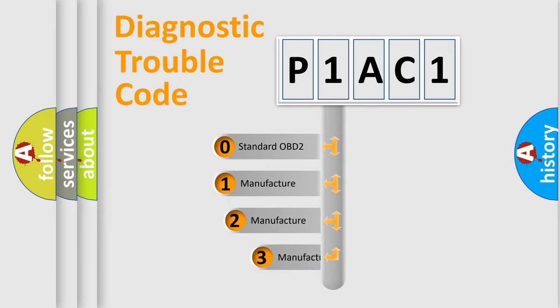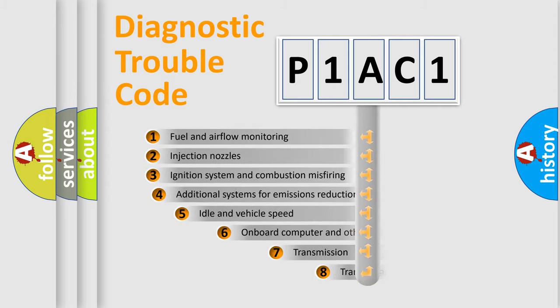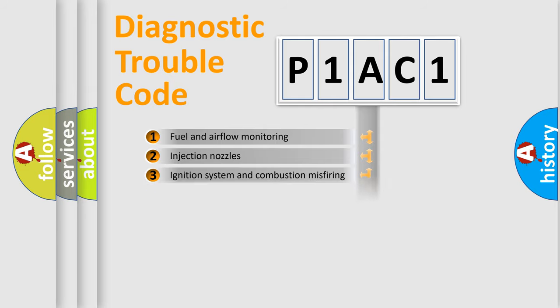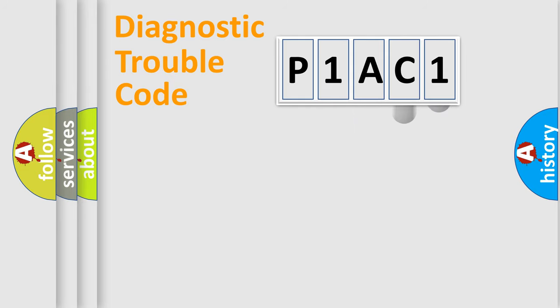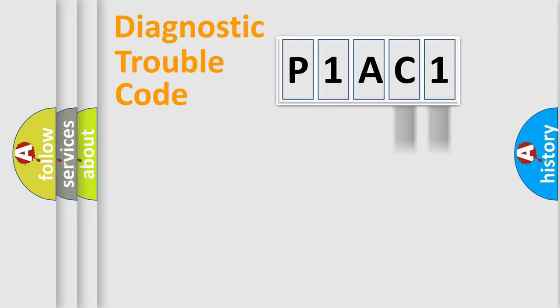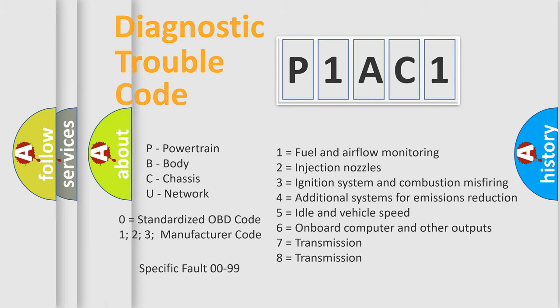If the second character is expressed as zero, it is a standardized error. In the case of numbers 1, 2, or 3, it is a more specific expression of a car-specific error. The third character specifies a subset of errors. This distribution is valid only for the standardized DTC code, where only the last two characters define the specific fault of the group.